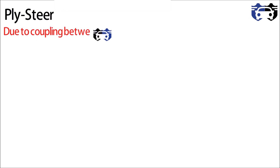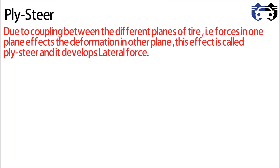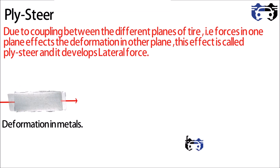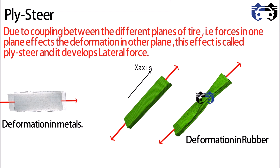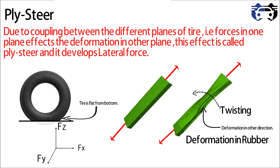The third phenomenon is ply steer. Due to coupling between different planes of the tire, force in one plane affects deformation in another — this is called ply steer and it develops a lateral force. When deforming a metal block, deformation occurs in one direction only. But when deforming a tire tread rubber block along the x-axis, the deformation produces twisting in the rubber block and deformation in the x, y, and z directions.